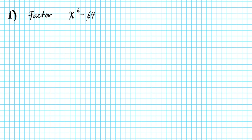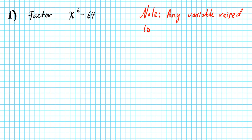Let's see if we can classify this. We have squares, we have cubes. Let's start with squares. Does this qualify as a difference of squares? One thing to note is that any variable raised to an even power is a square. Any number that's divisible by two is considered even.